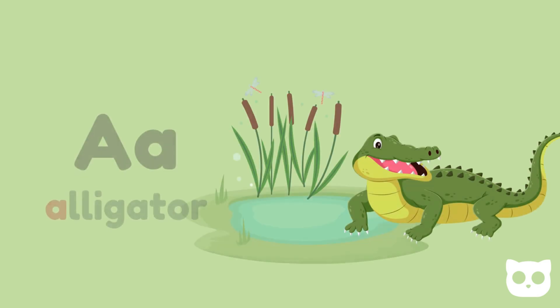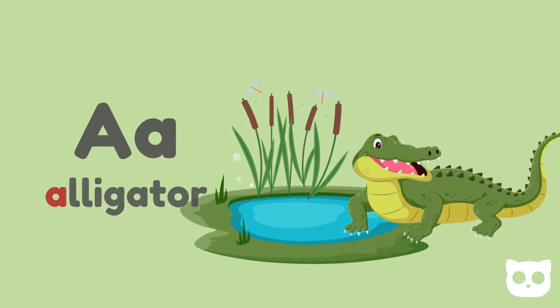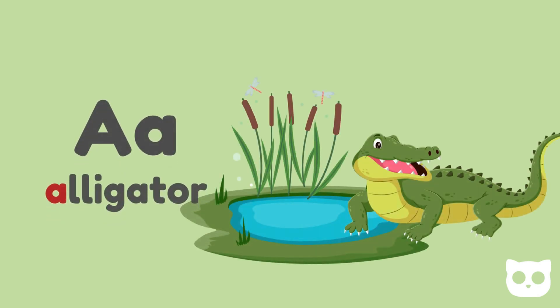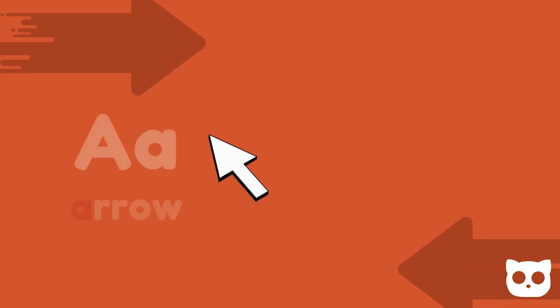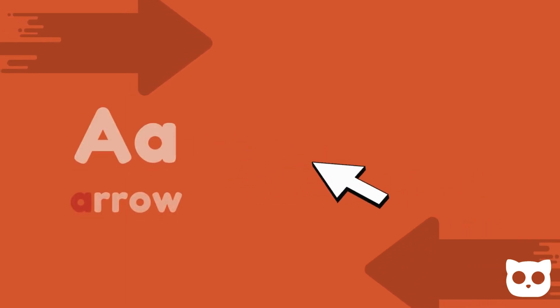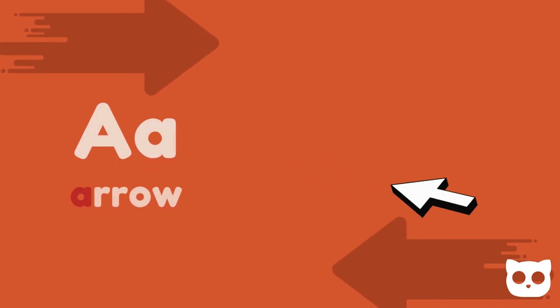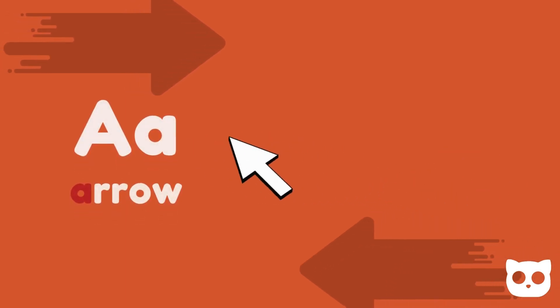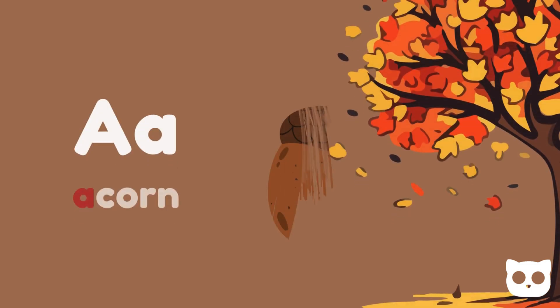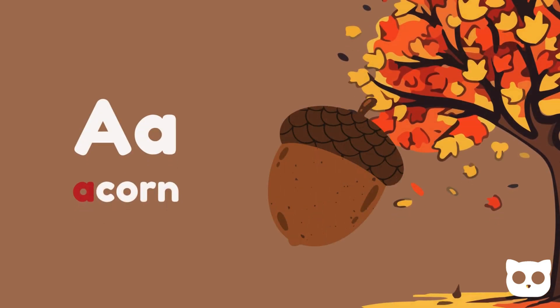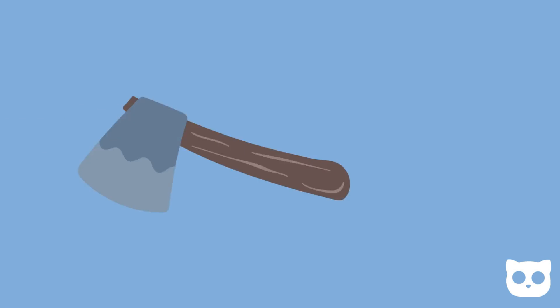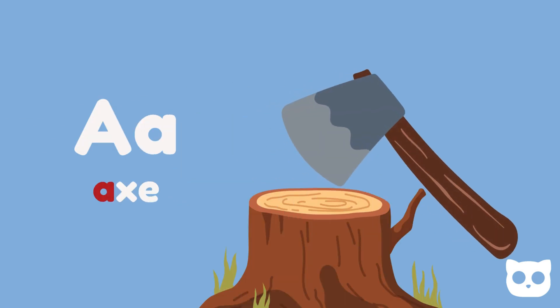A is for Alligator. A is for Arrow. A is for Acorn. A is for Axe.